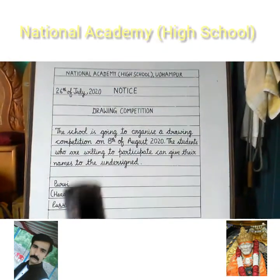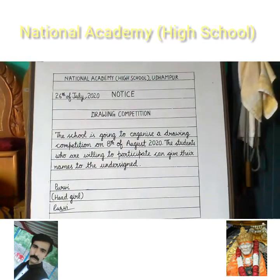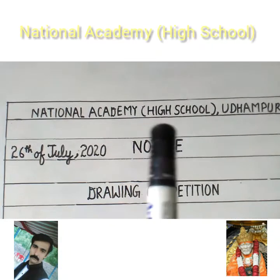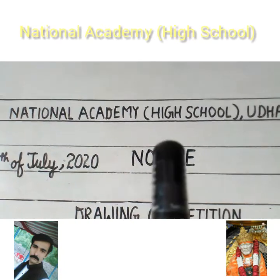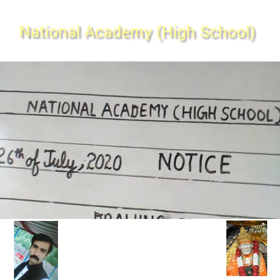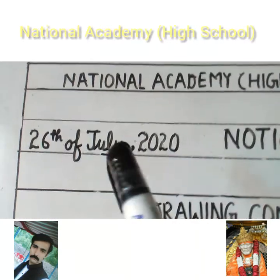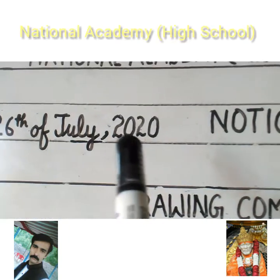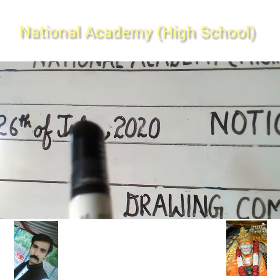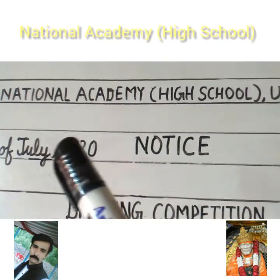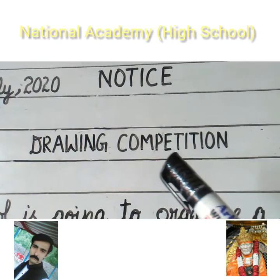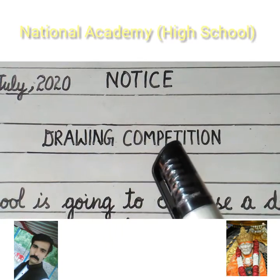Notice लिखने से पहले notebook पर एक square box बनाना है. Square box बनाने के बाद सबसे पहले institution का नाम आता है — जैसे National Academy High School, Udhampur — सबसे top पर. फिर एक line छोड़कर date लिखनी है, जैसे 26th of July 2020, और उसी line में center में capital letters में NOTICE लिखना है. फिर एक line छोड़कर topic की heading लिखनी है — जैसे Drawing Competition.